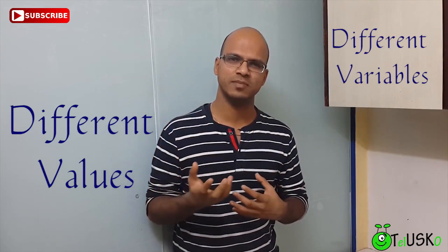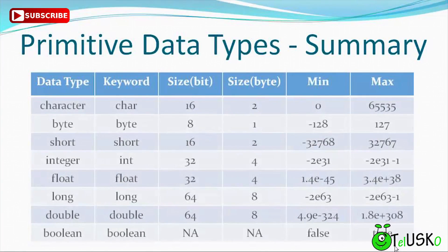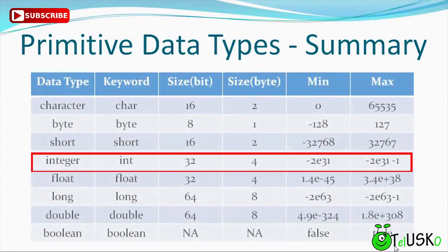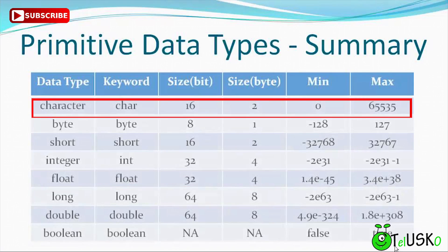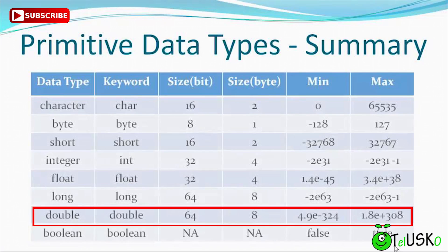So for different types of values we have different types of variables. In programming terms, if you want to store a number, we use 'int' — short for integer, which can hold values from negative to positive range. Then we have 'float' for decimal point values like 5.5 or 7.6. To store a character like 'a' or 'b', we require 'char'. We also have 'double', which has more size than float, and in Java all decimal point values are double by default.